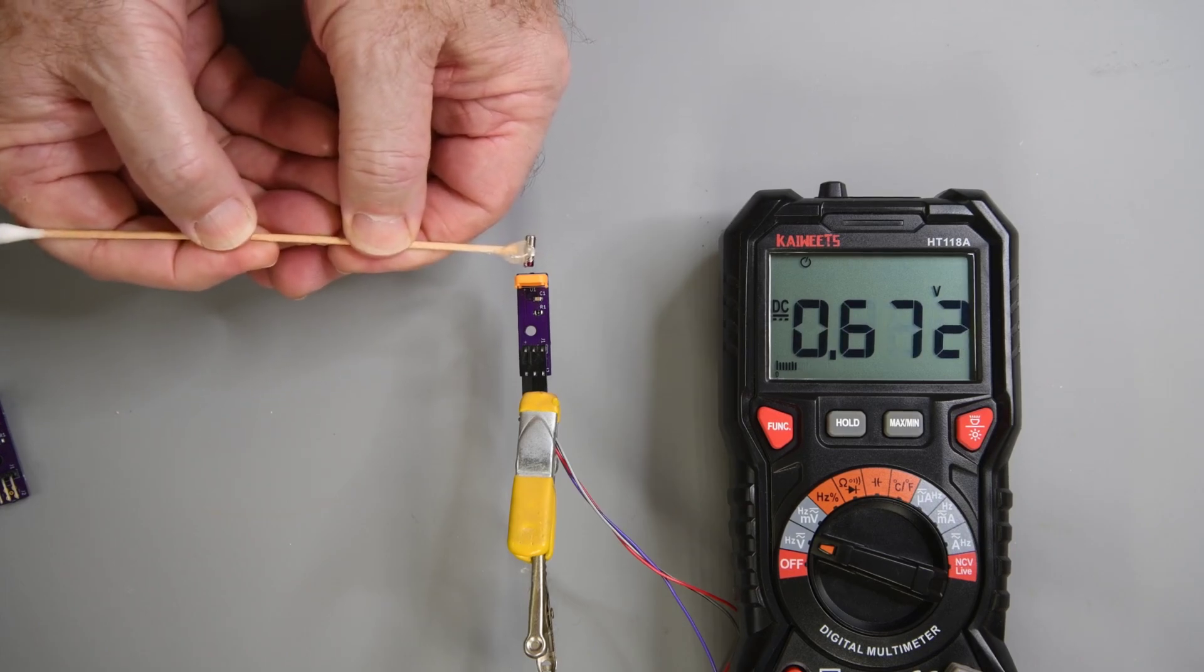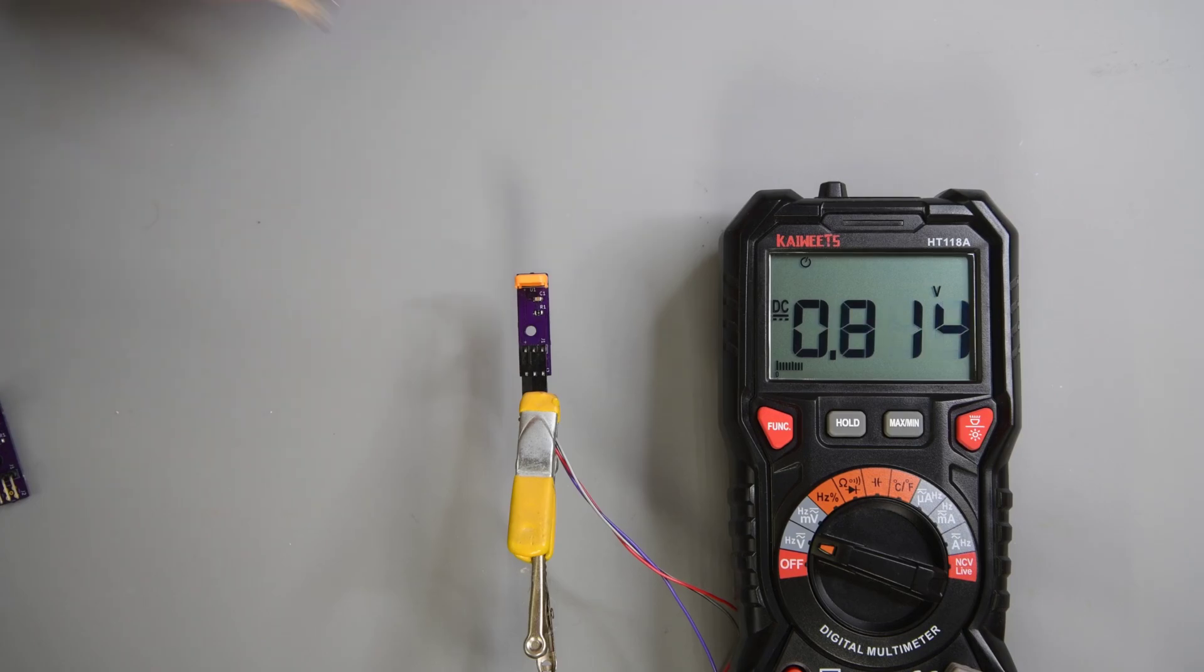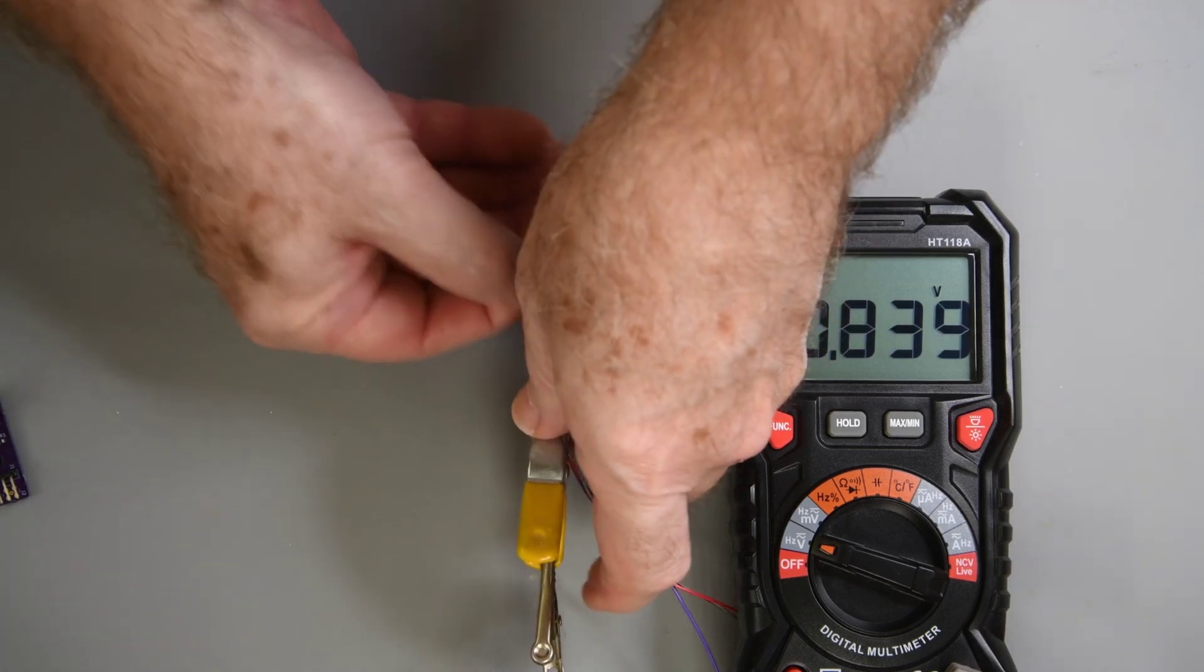If I rotate the magnet and place the north pole at the sensor, I get minimum output. And again it doesn't matter which side I move the magnet to. The voltage goes up.